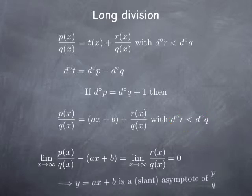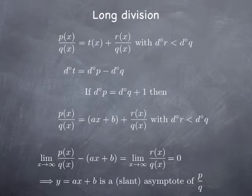Therefore, the line y equals ax plus b is an asymptote for p over q. The ax plus b that gives us the slant asymptote is what we obtain as the quotient in the long division.